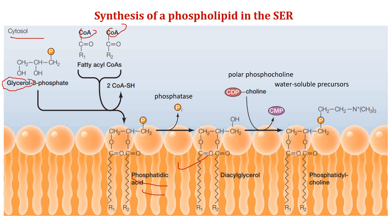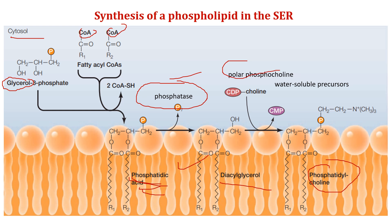The fatty acid chains are transferred to glycerol-3-phosphate by membrane-bound enzymes, and the resulting phospholipid — phosphatidic acid — is inserted into the membrane. Enzymes on the cytosolic face of the ER membrane then convert phosphatidic acid into diacylglycerol via a phosphatase enzyme. One by one, enzymes catalyze the addition of different polar head groups, resulting in the formation of phosphatidylcholine. The polar phosphocholine head group is added by CDP, converting it into phosphatidylcholine, which is a water-soluble precursor.